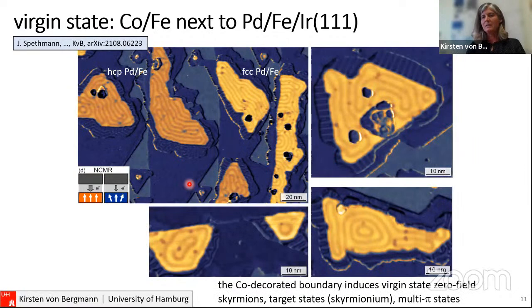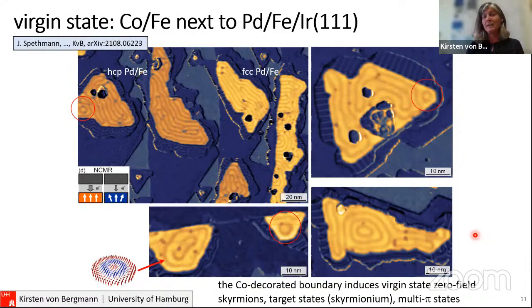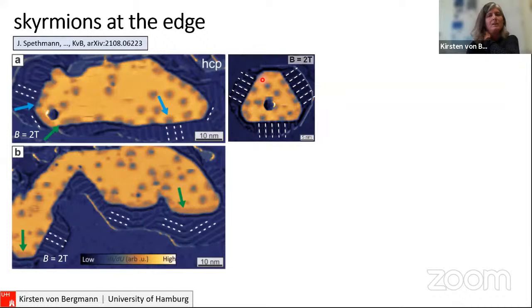Looking closely, especially in small islands, we see circles — those are skyrmions in the virgin state. Here we have two circles, which is basically a target skyrmion. We also see what looks like nearly three circles — a small gap in the third circle — going in the direction of multi-pi skyrmion states. We find it very interesting that by modifying the edge we can actually generate these states in the virgin state.